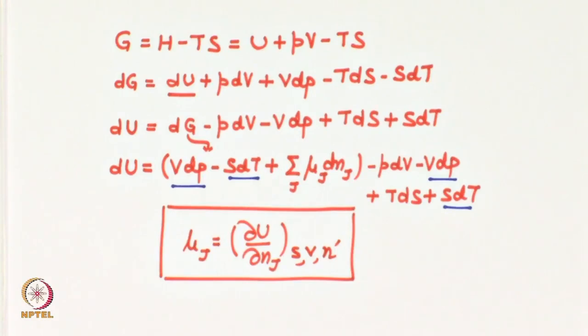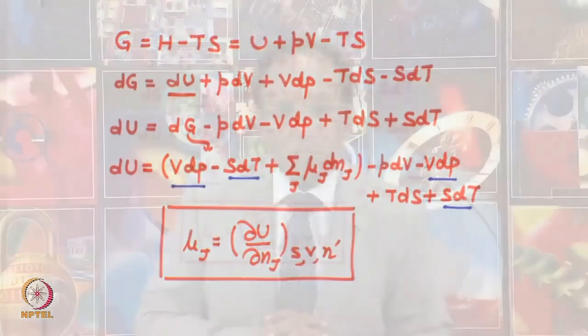We have established a relation between chemical potential and changes in internal energy. These intensive properties are getting connected to chemical potential through the changes in composition, which also tells us that these properties do depend upon the composition of the system.